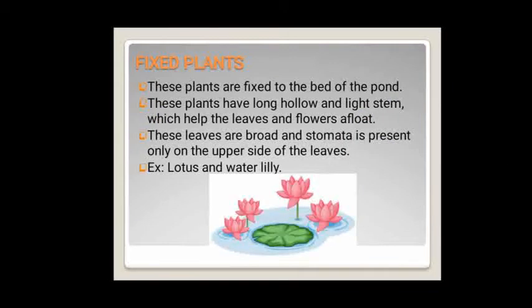The second type is fixed plants. These plants are fixed to the bed of the pond, so the name fixed plants is given. These plants have long, hollow and light stems, which helps the leaves and flowers to float. These leaves are broad and stomata is present only on the upper side of the leaves. As the leaves are floating in the water, there is no stomata on the underside.